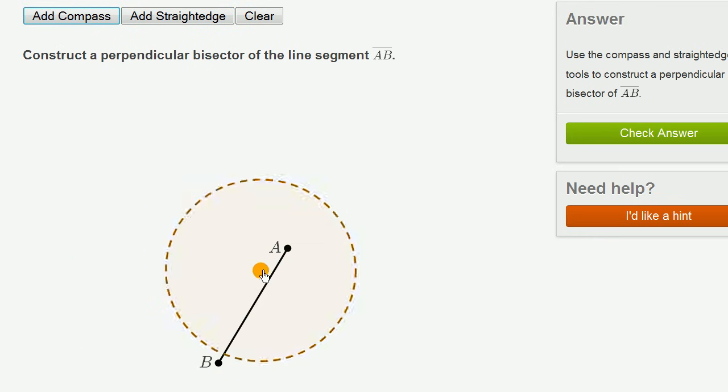This is kind of a virtual compass. In a real compass, it's one of those little metal things where you can pivot it on one point and you can draw a circle of any radius.